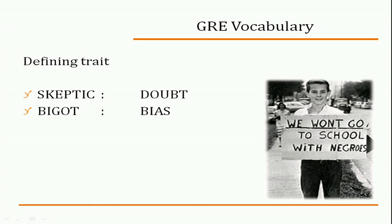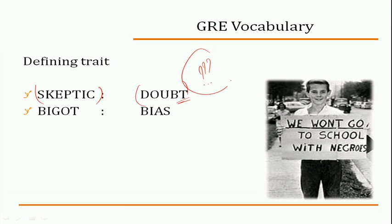Every character has a certain defining trait. For example, a skeptic is someone who would always doubt — you're being skeptical. Similarly, a bigot is somebody who is biased.